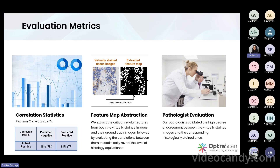OptraScan is proud to say that we have achieved a 90% correlation. This correlation was tested through feature map abstraction, where we extract the cellular features from both the virtually stained image and the ground truth image, and evaluate the correlation between them. This is where we get the 90% correlation, and we know we're onto something really, really good here. We also tested the percent of true positivity in the results.